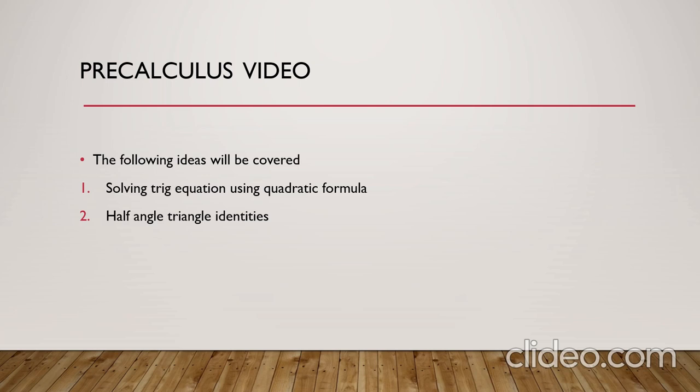talk about half-angle triangle identities. Half-angle formulas can be derived using the double-angle formulas. As we all learned, the double-angle formulas can be derived using the angle sum and difference formulas of trigonometry. Half angles in